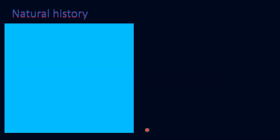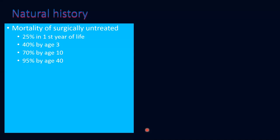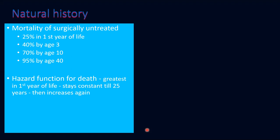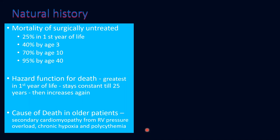The natural history of uncorrected tetralogy: mortality rate in the first year is 25%, with 95% mortality by age 40. Between 1 and 3 years, there is massive attrition to 40% of children surviving, and by age 10 there is a significant mortality of 70%. The greatest hazard function for death is in the first year of life, caused by spells or severe cyanosis that could not be addressed. The hazard function increases until age 25, then remains constant, then increases again. Death in older patients is often secondary cardiomyopathy from RV pressure overload, chronic hypoxia, or polycythemia.